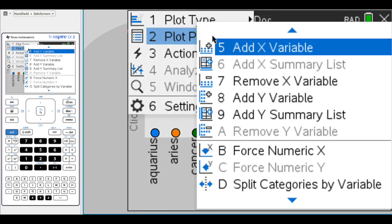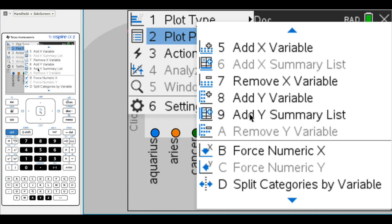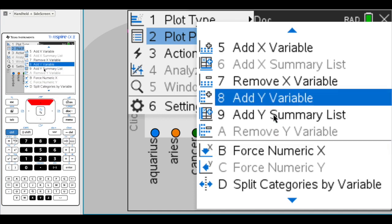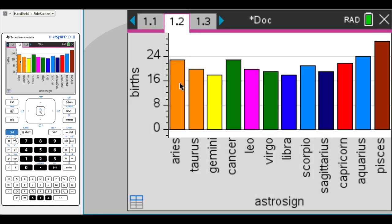Then we're going to add a Y summary list. If I click add Y summary list, I'm going to select the births column, which gives me the frequency for each one. And if we can see, this line right here is about our average at 21 and a third. We can see that Pisces a little outpeaks everything.